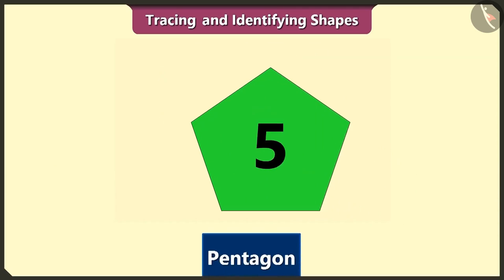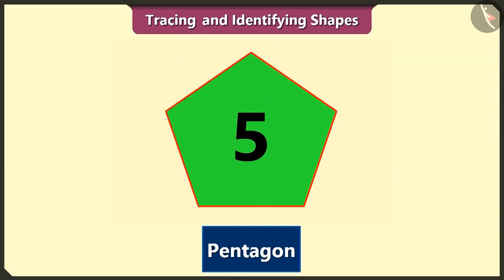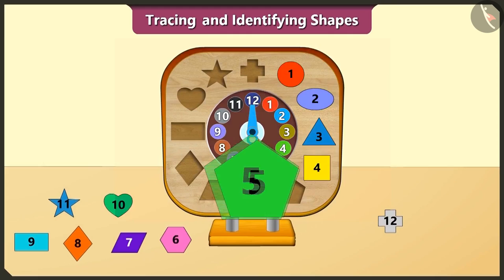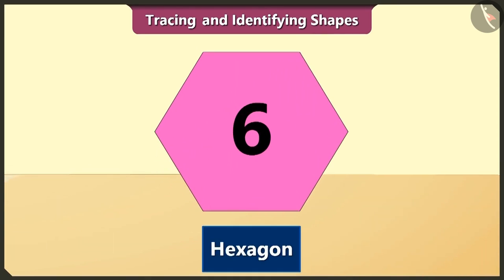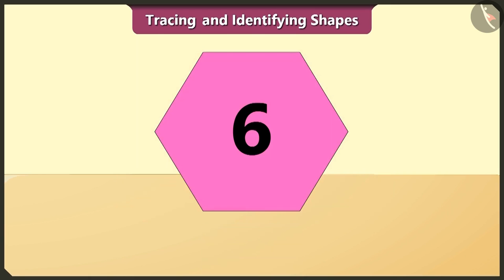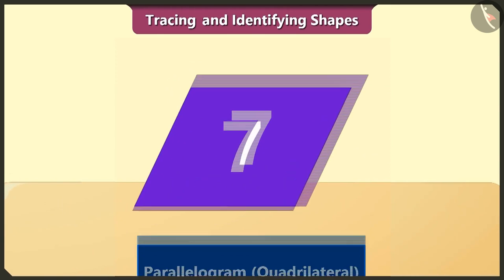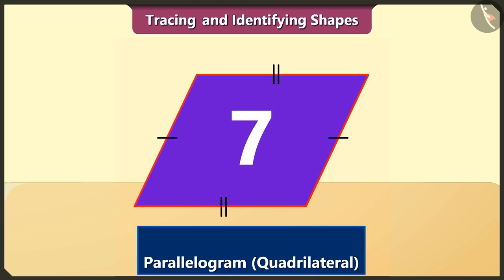The five-sided pentagon is fifth in order. The six-sided hexagon is sixth in order. The four-sided quadrilateral is seventh in order.